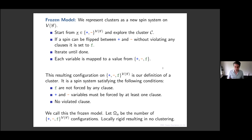The reason is that the frozen model has a local rigidity property: for a typical solution, you won't find any other nearby valid configurations of the frozen model unless you change a linear number of variables. You can't typically just make a small change; you have to make a big change to go from one solution to another. This local rigidity removes the clustering, and we can in fact apply the first and second moment methods to understand the frozen model.